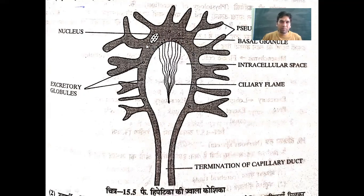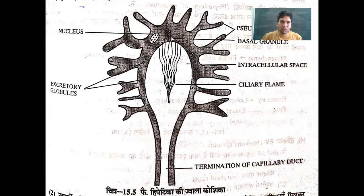All these cilia originate from the basal granules. The cytoplasm of the flame cell is located at its peripheral part, while the cavity in the center contains numerous cilia. In the cytoplasm, many excretory granules are present, and the nucleus is also located in the peripheral cytoplasm.